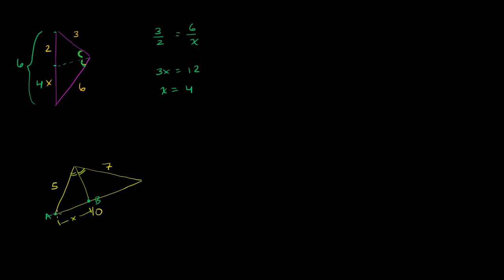So once again, angle bisector theorem. The ratio of 5 to x is going to be equal to the ratio of 7 to this distance right over here. And what is that distance? Well, if the whole thing is 10, and this is x, then this distance right over here is going to be 10 minus x. So the ratio of 5 to x is equal to 7 over 10 minus x.